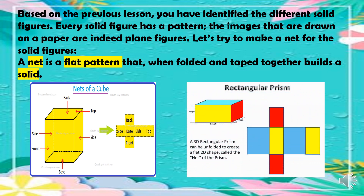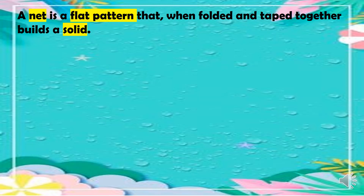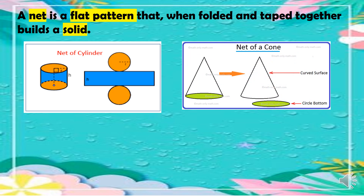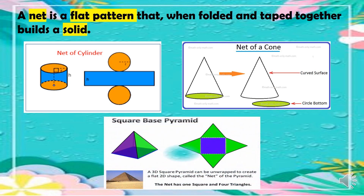If you're going to make a rectangular prism, this is the net of a rectangular prism. We also have the net of a cylinder — it looks somewhat like a division sign. Then we have the net of a cone, which has a curved surface and a circle at the bottom. And for the square-based pyramid, the net has one square and four triangles.